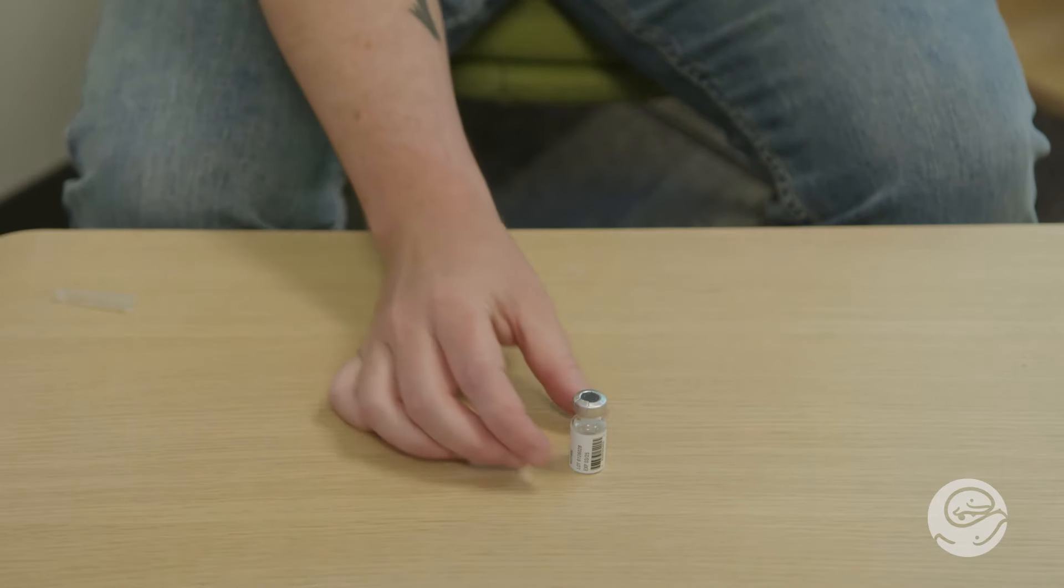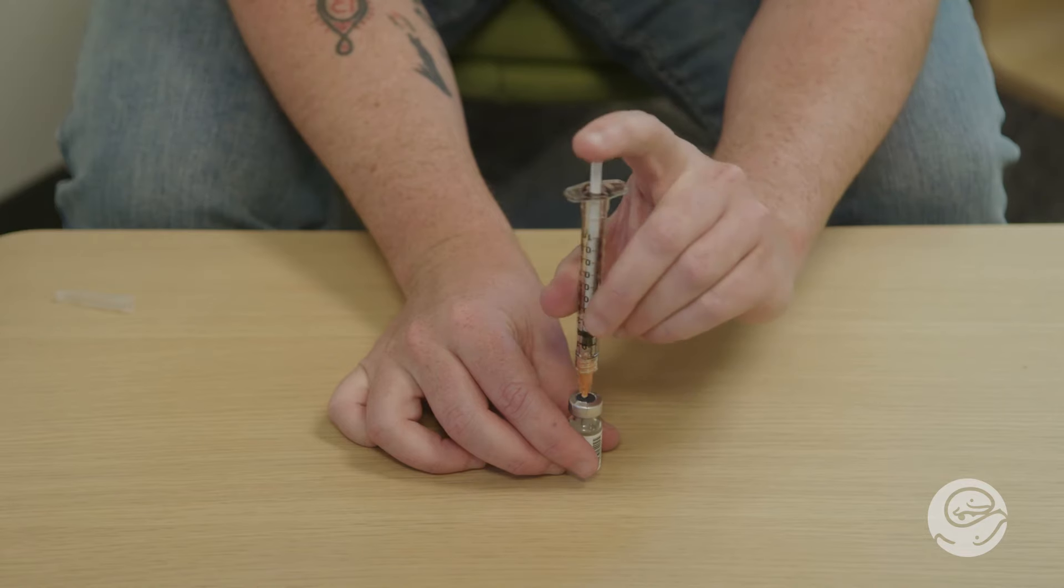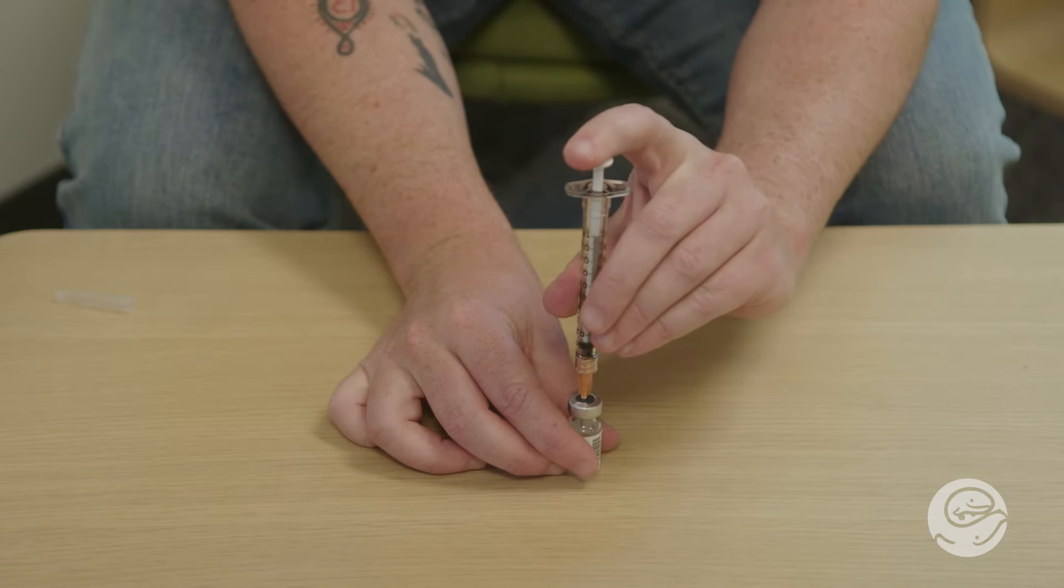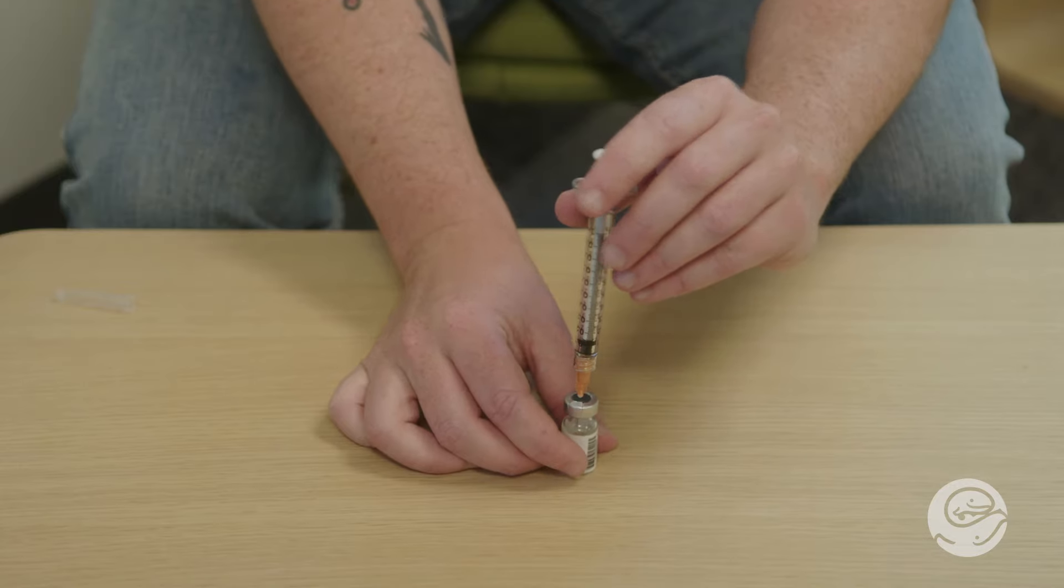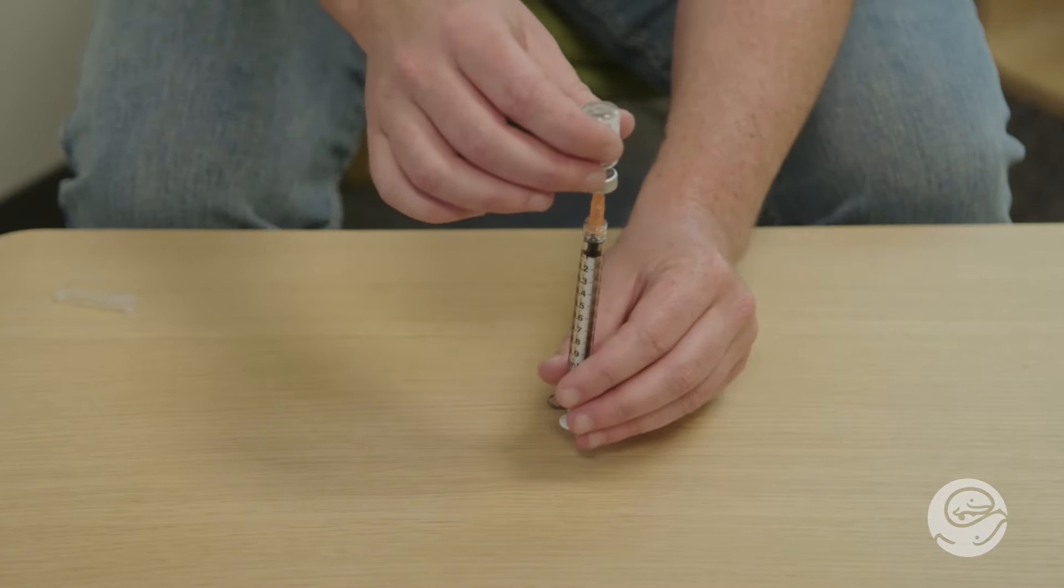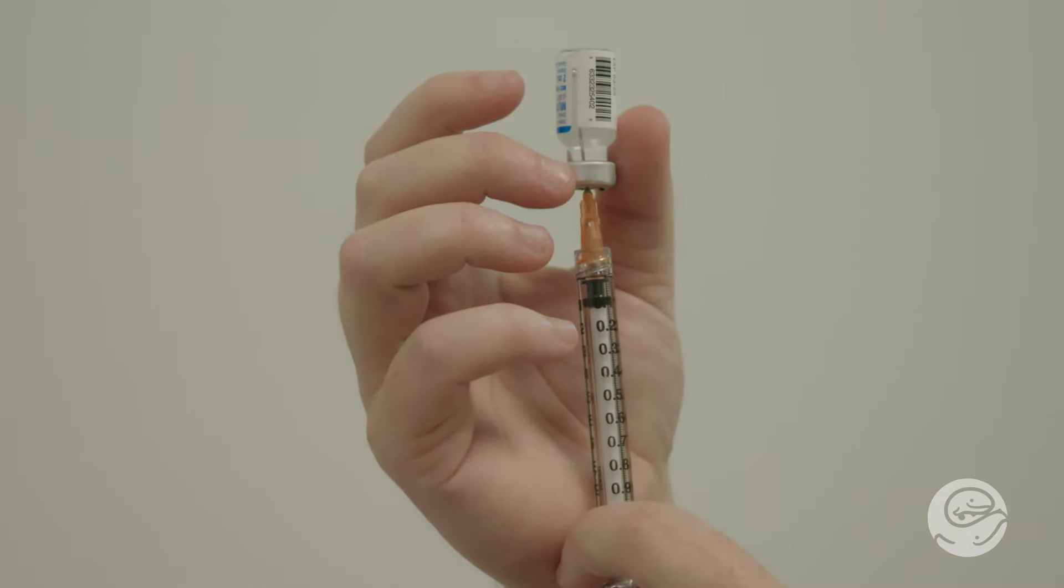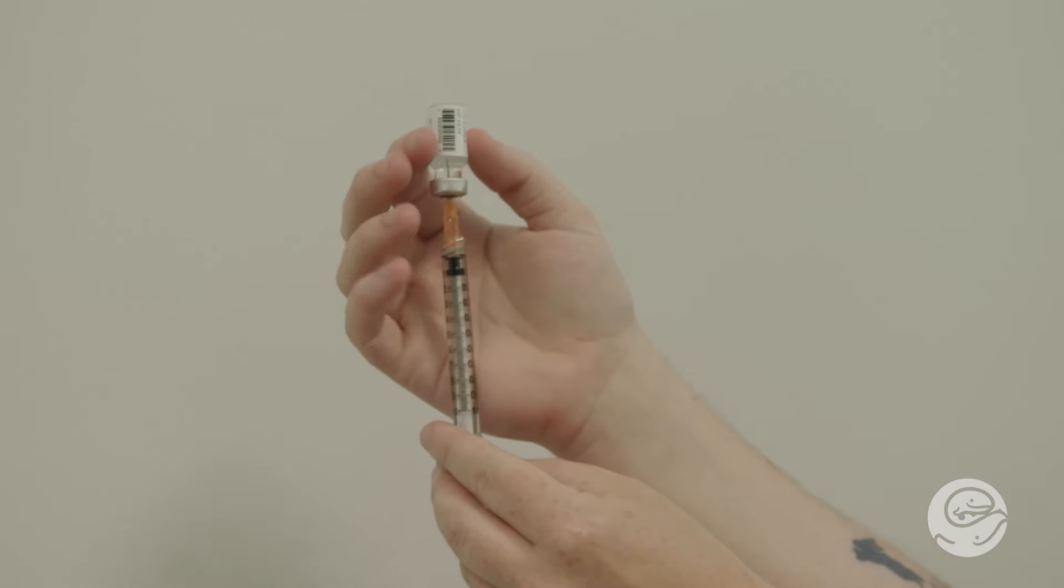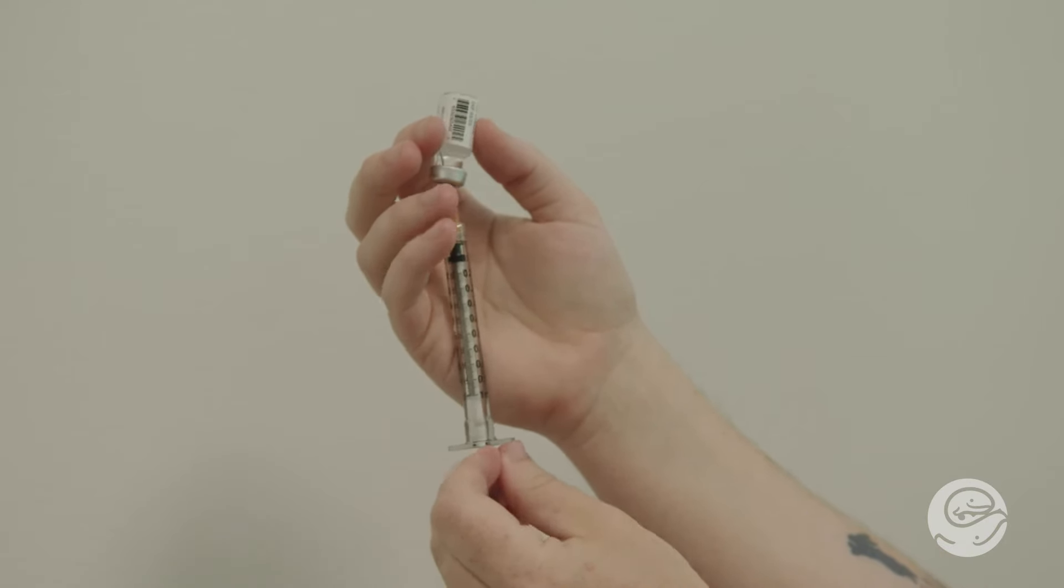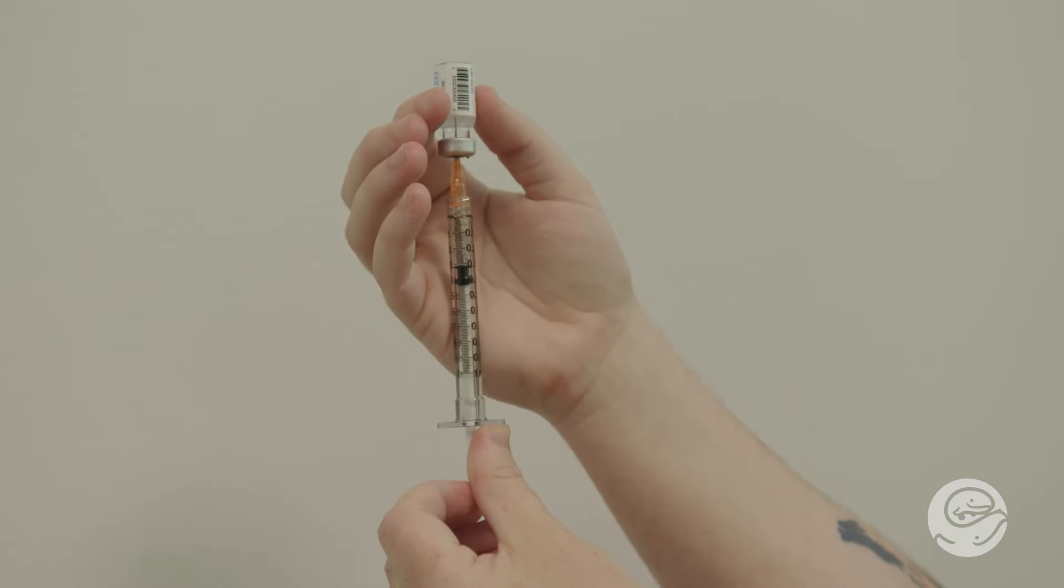Now that the needle is uncapped, hold the vial steady on your surface and insert the needle straight down into the medicine through the rubber part of the cap. Push the air into the vial. Holding the vial in one hand and the syringe in your other, turn the vial upside down. Look to make sure the tip of the needle is in the medicine and pull back on the plunger to draw up your dose. These medicines are thick and go slowly into the syringe through the thin needle. There is no rush. Pull back evenly on the plunger to pull the medicine into the syringe.